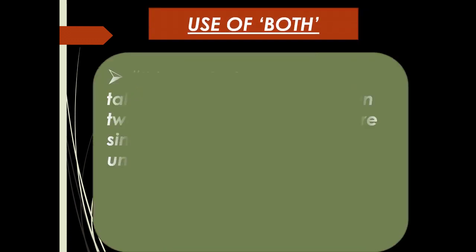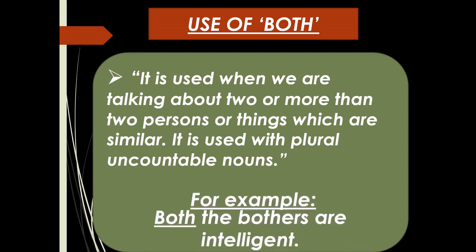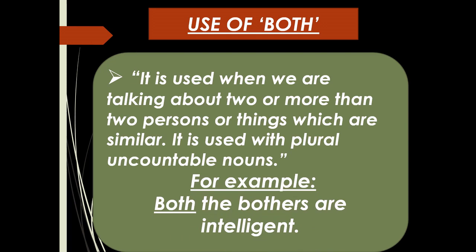Use of 'both': 'Both' is used when we are talking about two or more persons or things which are similar. It is used with plural uncountable nouns. For example: 'Both the brothers are intelligent.' When two things or persons are similar to each other, we use 'both'.